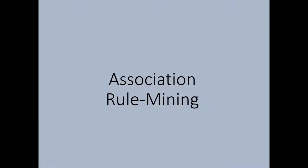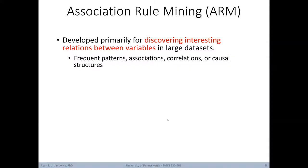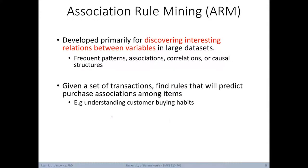First up, let's talk about association rule mining. Association rule mining, or ARM, was developed primarily for discovering interesting relationships between variables in large datasets — looking for frequent patterns, associations, correlations, or causal structures between features, and not necessarily trying to predict any outcome. This algorithm was originally designed for situations where we were trying to predict what products might be bought together in a store. So given a set of transactions, find rules that will predict purchase associations among items.